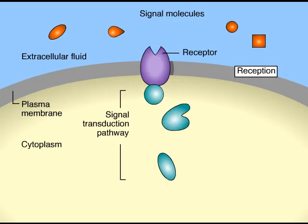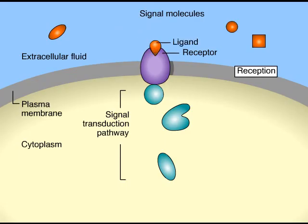The cell targeted by a particular signal has a receptor molecule complementary to the signal molecule, or ligand. The ligand fits like a key in a lock and triggers a change in the receptor molecule.